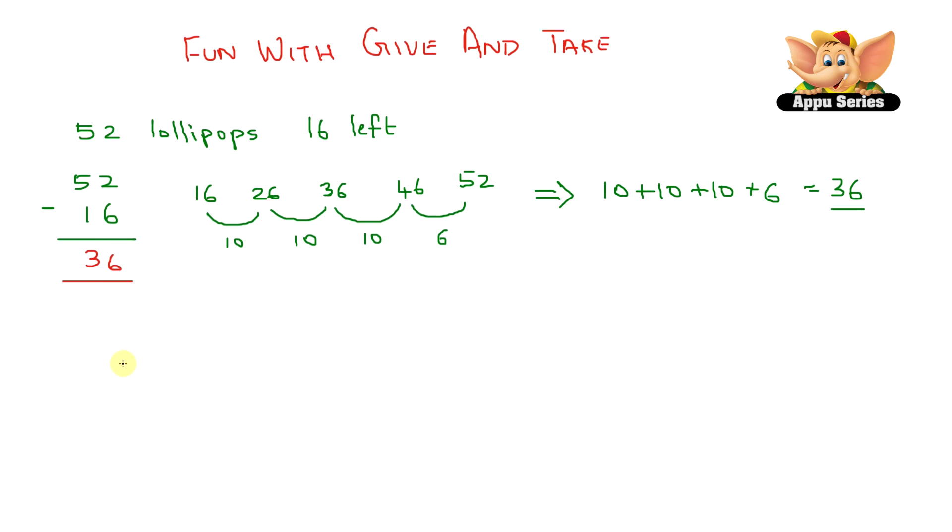Now let's try another example. We have 84 minus 55. Let's try counting forward from 55. Jump from 55 to 65 to 75 to 85, and then we jump a step back to 84. So here we have 10 plus 10 plus 10, which is 30 minus 1 equals 29. So 84 minus 55 equals 29.